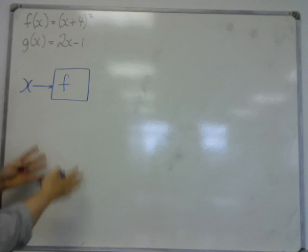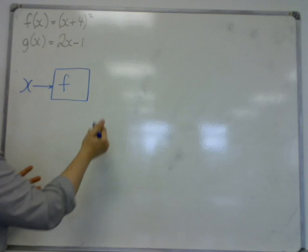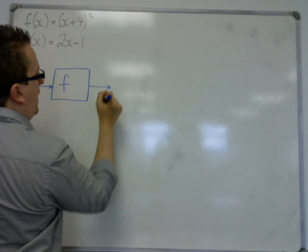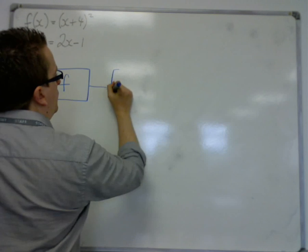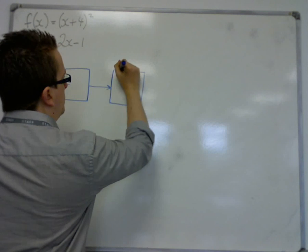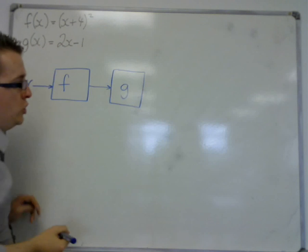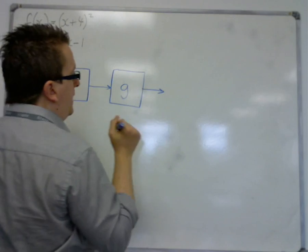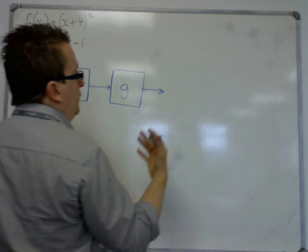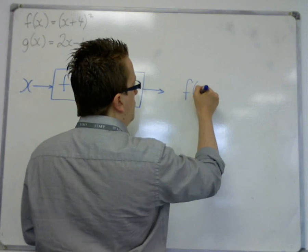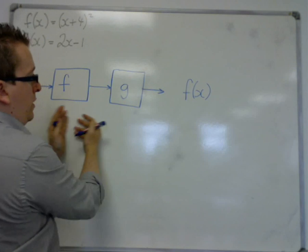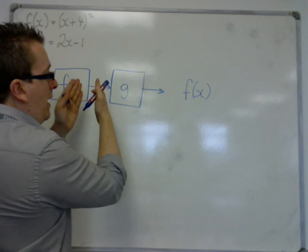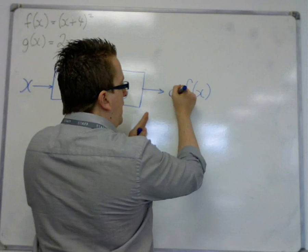First of all we apply f to it and out would come f of x, and then we put it through a second function machine, let's call this one g. So what we get at the end is that we've put x through and we've got our f of x, and then we put f of x into g of x.